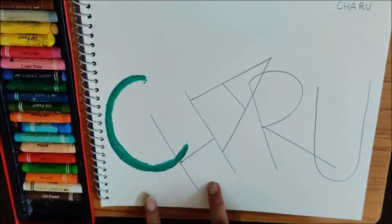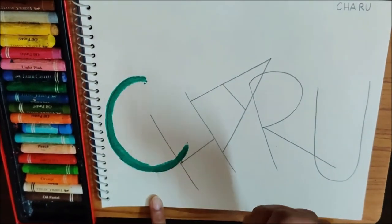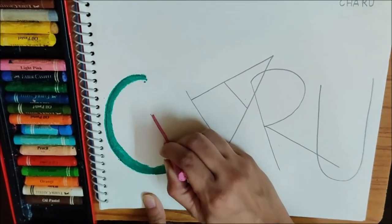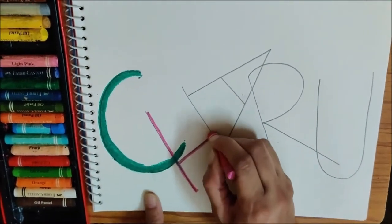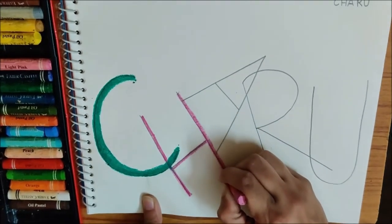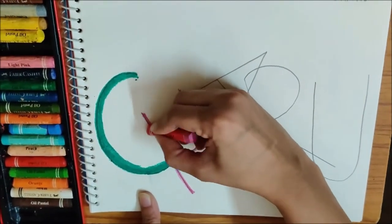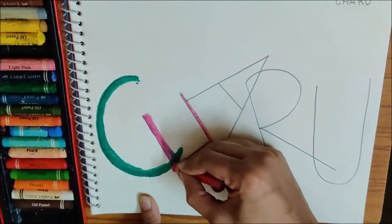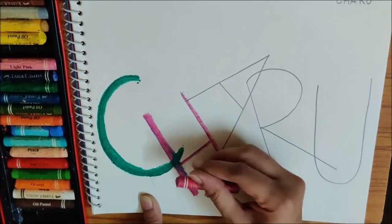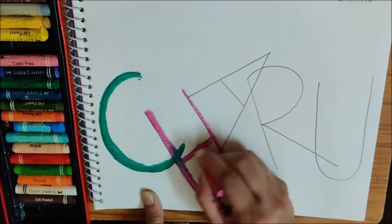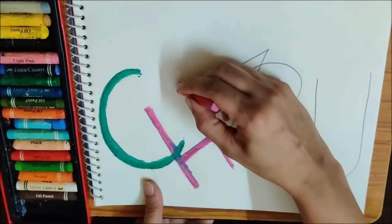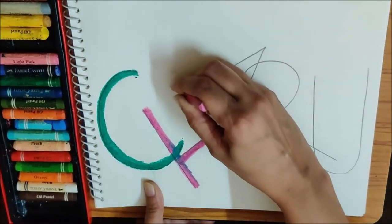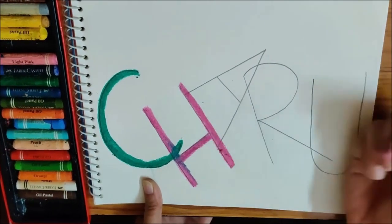Now, for the next letter, I will use another colour. So, I am changing my colour. I am taking pink now. I am tracing it. And, now I have to make it thick. This letter is done.